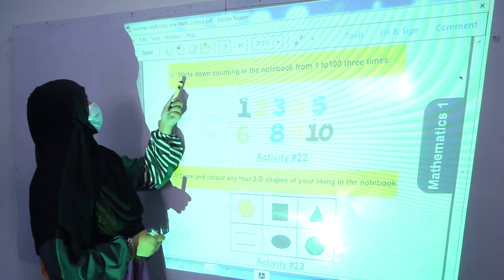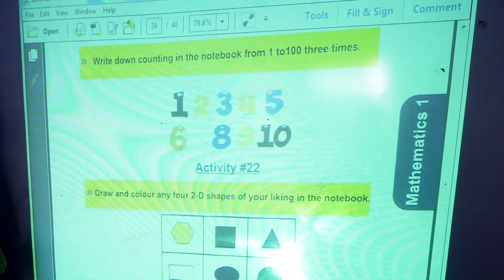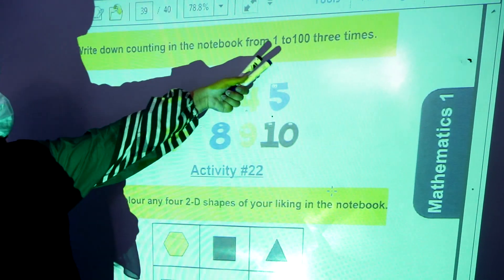Activity number 21, write down counting in the notebook from 1 to 100 three times. You have to write down the counting from 1 to 100 three times in your notebook.